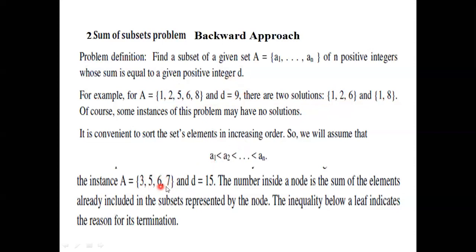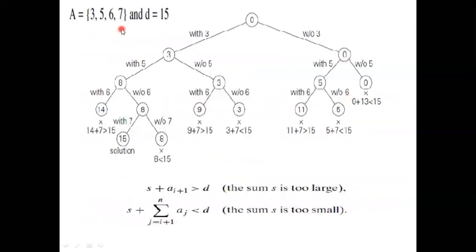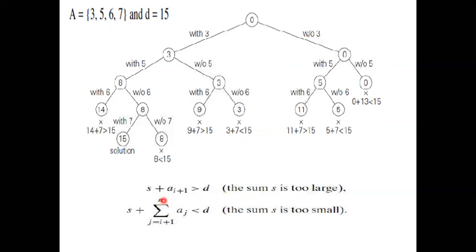Now directly we will solve this particular problem. This is the way we have to solve — same question repeated here. Before going to solve we have to check whether we can get the answer D=15 or not. If the first value itself is 16, can we get it? No, it is not possible. The first check is: if the first number is larger than D, definitely we cannot get the solution. The second check is: if we add all the numbers and the total is still less than 15, we also cannot get the solution.